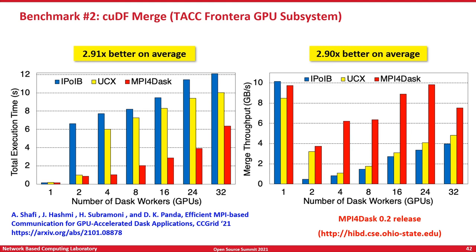Similarly, we have benchmark 2 — cuDF merge — running on TACC Frontera GPU subsystem. Here again you see a very similar trend: total execution time on the left side and merge throughput on the right side — higher is better. We are able to deliver almost a factor of 2.9 to 3x improvement compared to other solutions on throughput, and we are able to reduce total execution time by a similar factor of approximately 2.9x.